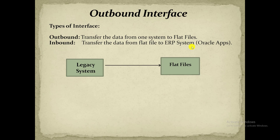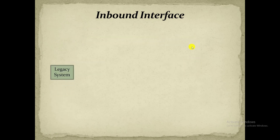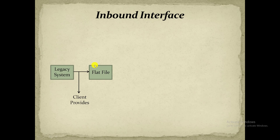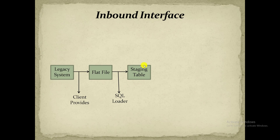But inbound process is somewhat complex. For inserting the data into another system we have to follow a process. The data comes from the legacy system — the previous ERP system — given as a flat file, which we already saw in the outbound interface. This flat file is provided by the client to us. Then we have to insert that flat file data into our Oracle App. For that we use a staging table. A staging table is a user-created table used for storing the data of the flat file. First we create the staging table and by using the SQL Loader program we insert all the data into the staging table. The number of columns in a CSV and number of columns in the staging table are the same. We insert the data using SQL Loader from the flat file to the staging table.